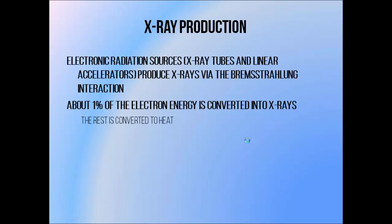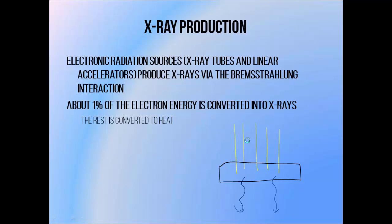Most radiotherapy treatments in the modern age are carried out using photon beams generated electronically. These are usually produced using x-ray tubes, which we're going to be covering in this tutorial, and linear accelerators, which we'll be covering later on. They both use the same method of photon beam production, which is to generate a high energy beam of electrons and slam it into a target material. Inside the target, the electrons undergo the bremsstrahlung interaction, meaning that they lose energy in the form of photons as they interact with nuclei within the target.